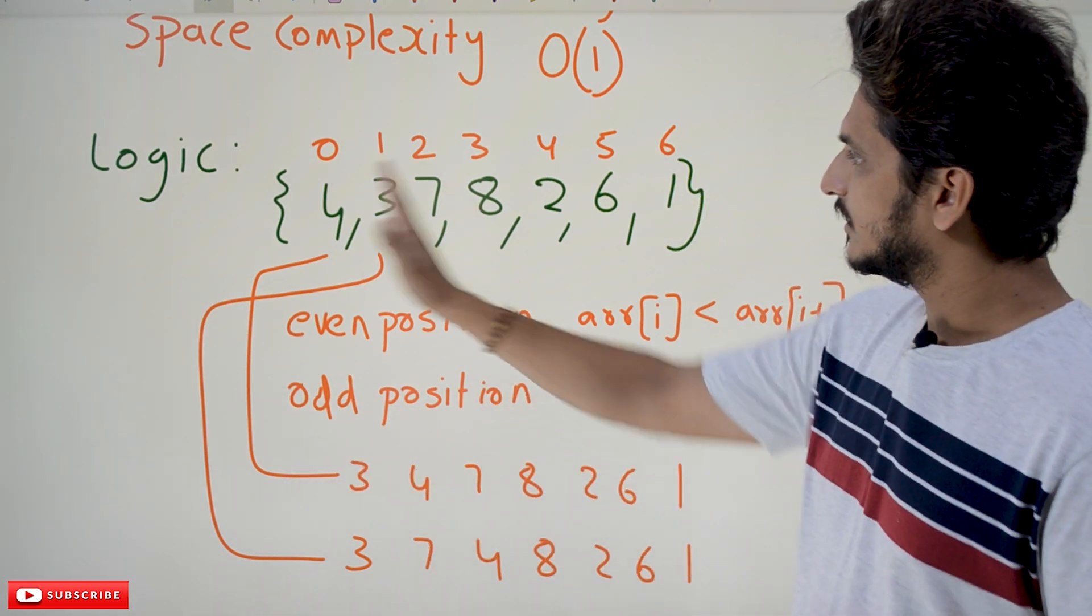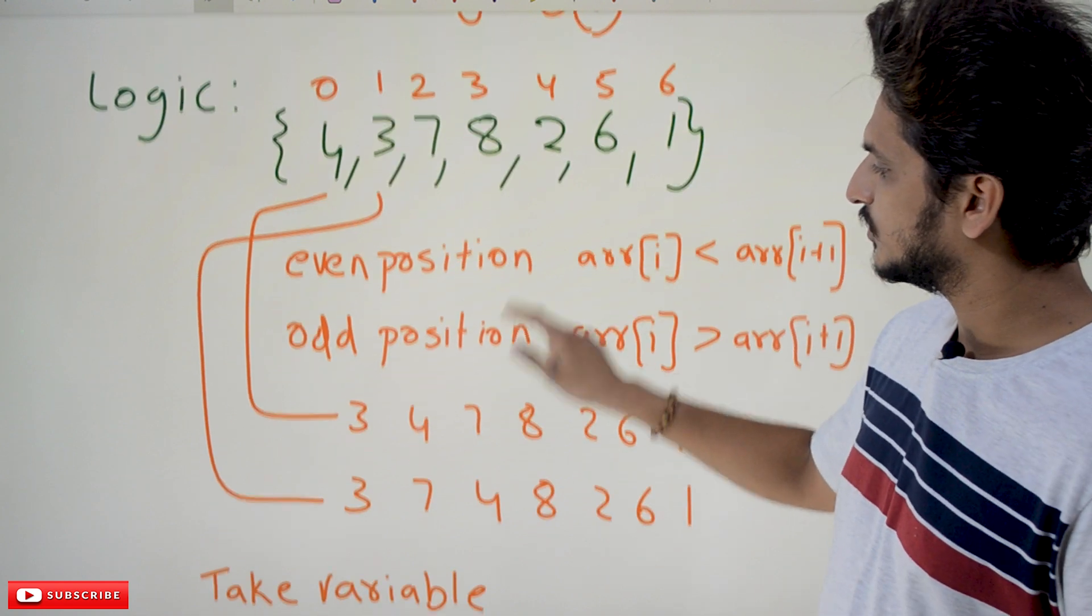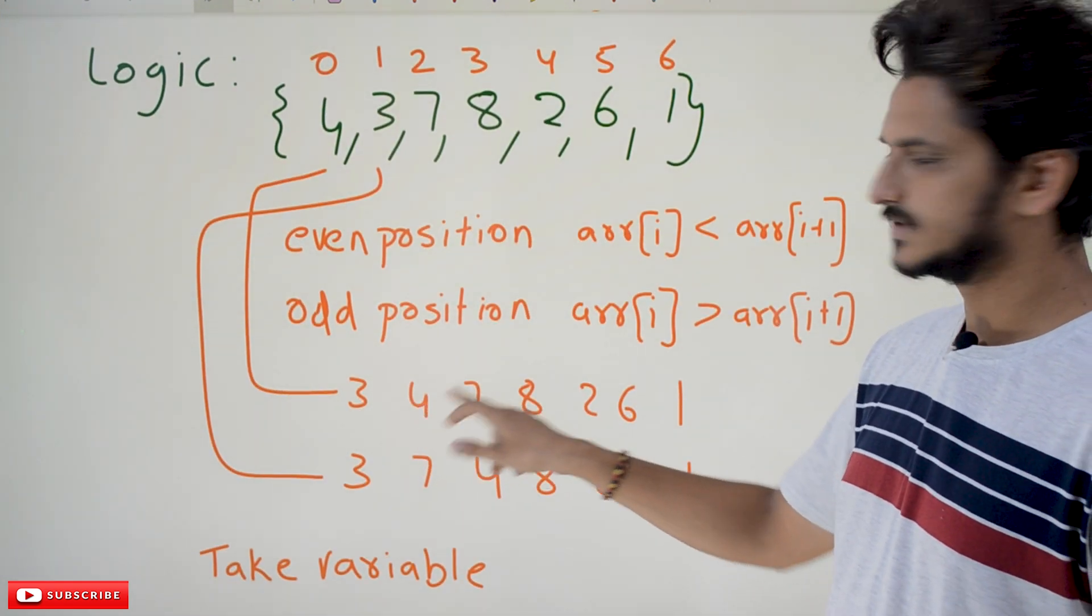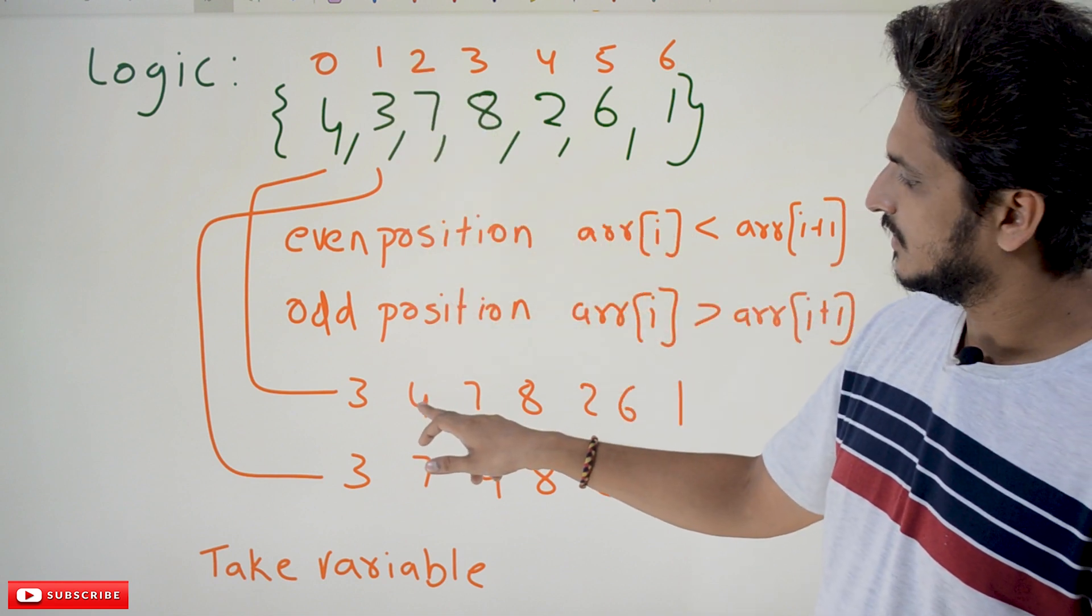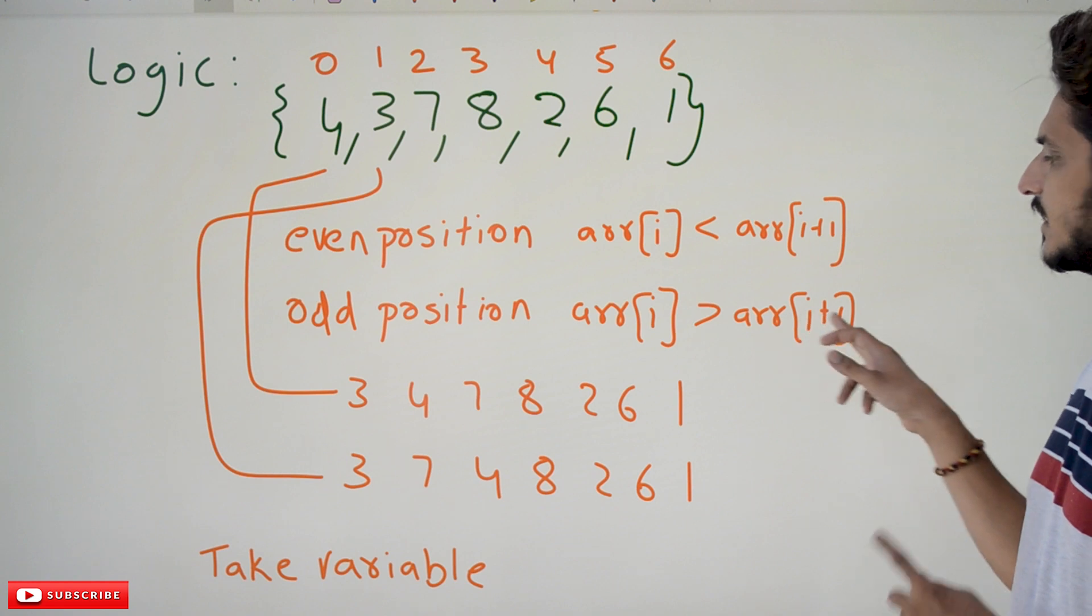Do it again. Next move to the second position. Second position means the element will be 4 and 7. If you are in the odd position you have to check the condition arr[i] greater than arr[i+1].